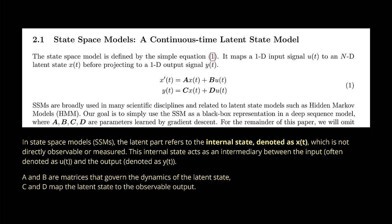These SSMs are broadly used in many scientific disciplines, including hidden Markov chains. I simply use this as a black-box representation in a deep sequence model where A, B, C, D are high-dimensional parameters learned by gradient descent — just as in a normal neural network. The latent part refers to the internal state x(t), not directly observable, acting as an intermediary between input and output. Matrices A and B govern the dynamics of the latent states; C and D map the latent state to the observable output.